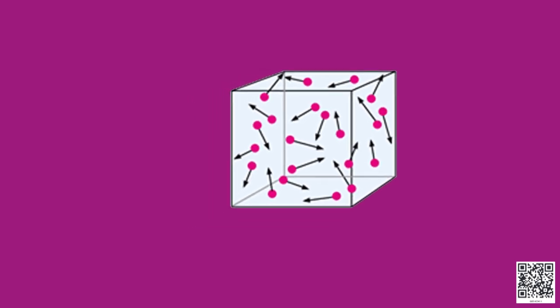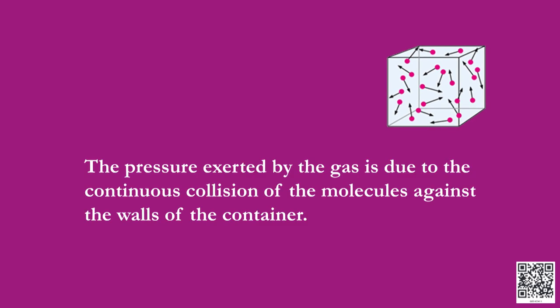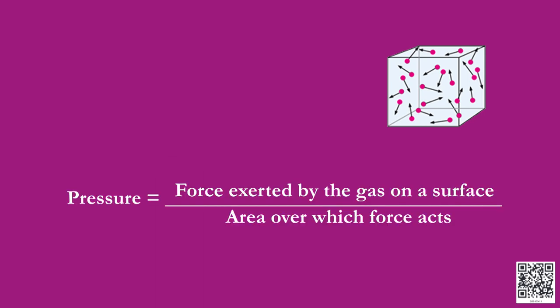But how do gases exert pressure? Gases have molecules in them. The molecules of a gas are in a state of constant random motion and they continuously collide against the wall of the container. The pressure exerted by the gas is due to the continuous collision of the molecules against the walls of the container. Just like we calculate pressure exerted by liquid on a surface, we can also calculate pressure exerted by gases in the same way.